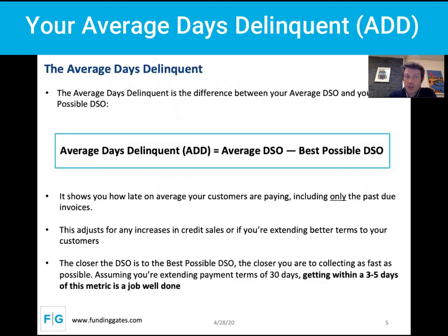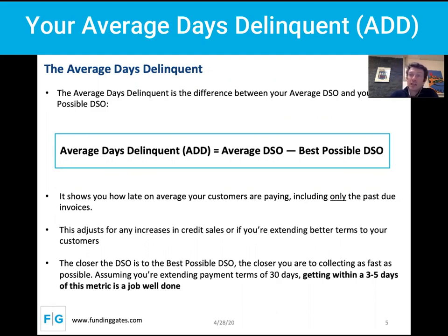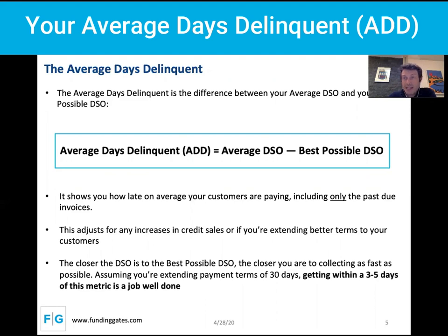Getting your credit sales right is really important when calculating your DSO formulas. Your Average Days Delinquent is then the difference between your average DSO and your best possible DSO. It shows you how late, on average, your customers are paying — it only looks at past due invoices and adjusts for increases in credit sales or when you're extending better terms to customers, excluding those scenarios and focusing on the most past due invoices in your aging report.